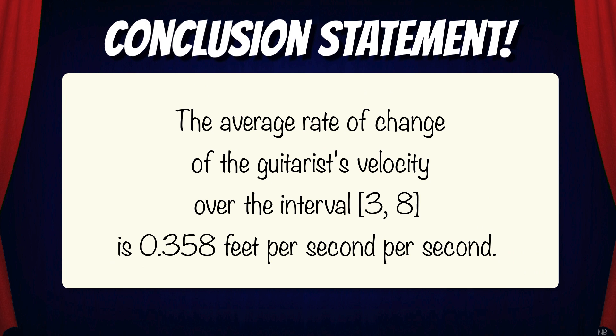Now let's end with a conclusion statement. We can say the average rate of change of the guitarist's velocity over the interval [3, 8] is 0.358 feet per second per second. And that gets us back to the context of the problem.